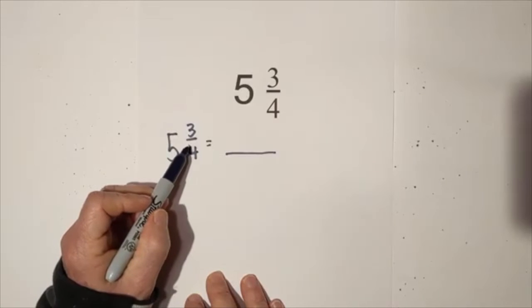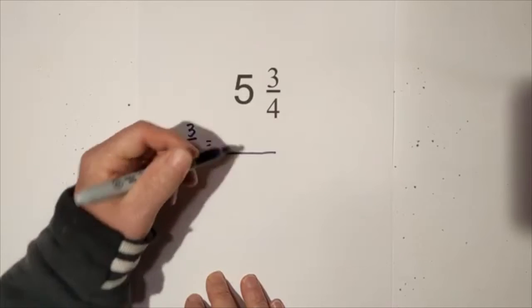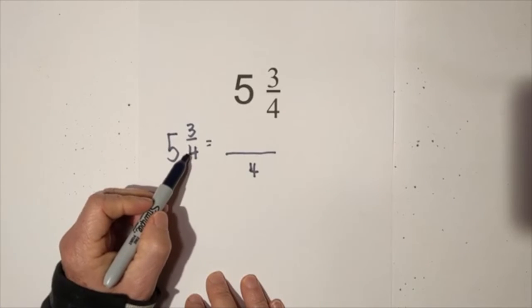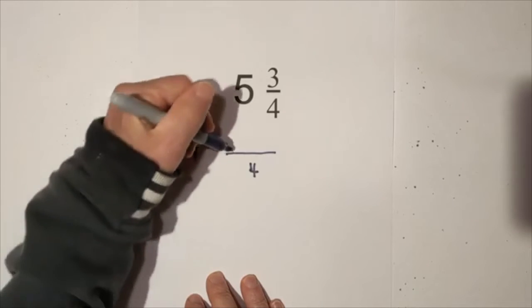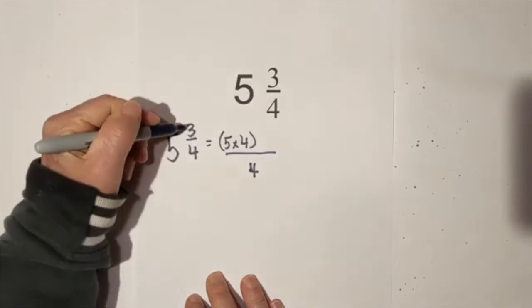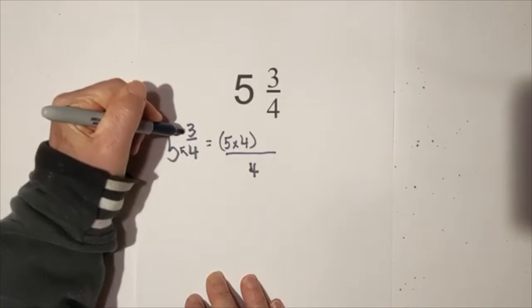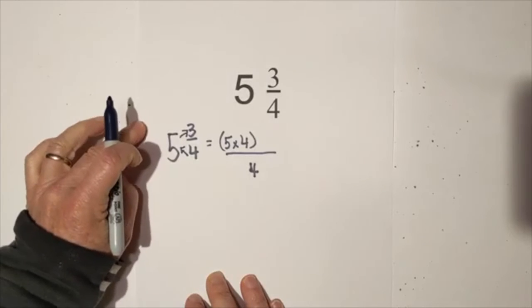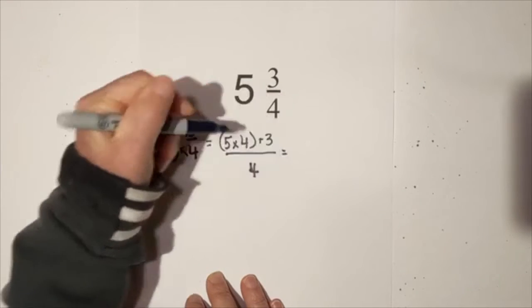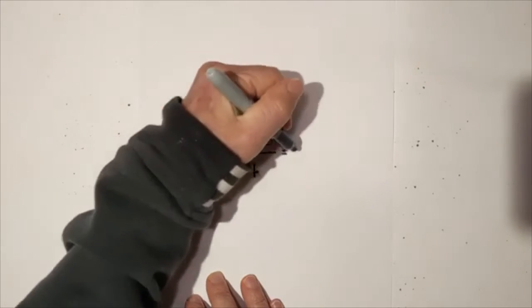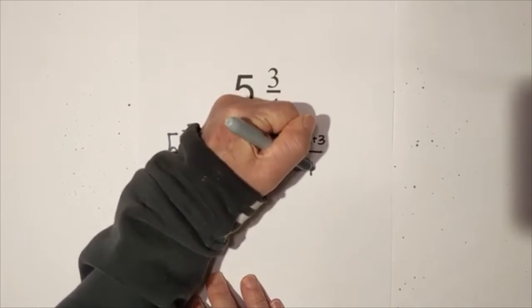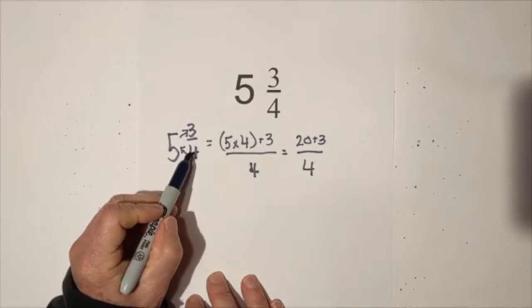We know that the denominator of the fraction always remains the same. So I'm going to write 4, and then we have 5 parts of 4. So I'm going to go 5 times 4 plus the numerator. And so when I complete this, 5 times 4 is 20 plus 3, remember it's all over 4, our original denominator.